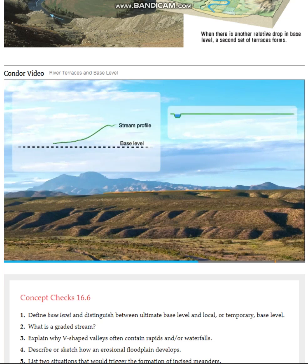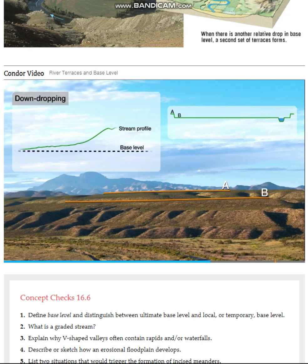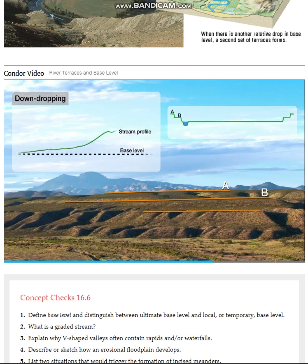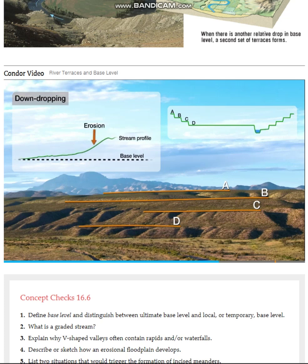The floodplain started at this level. The level of the Rio Grande has dropped several times due to climatic changes, thus lowering the local base level. Each time the Rio Grande cut lower, this stream found itself further above its local base level and responded with downward erosion. The stream would then reach its base level, stop eroding downward, and erode laterally for some time, creating a wide floodplain valley. Each terrace is the level of a former floodplain where downward erosion paused for some time.